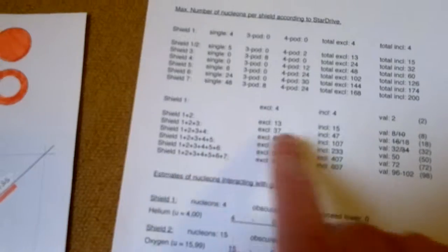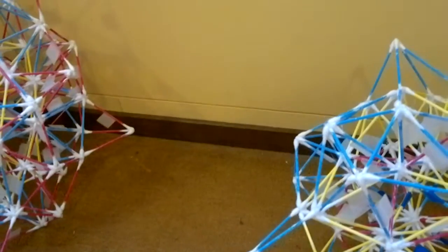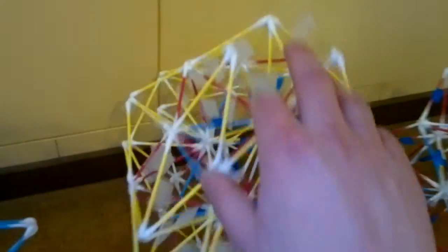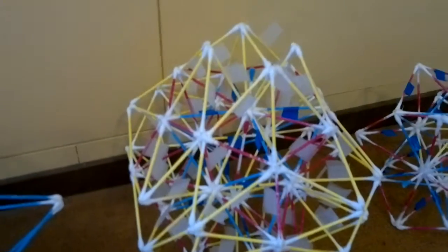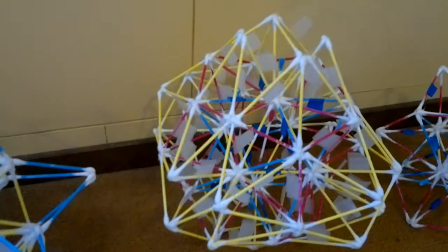And if I add those shields, I can keep track of the number of nucleons every atom, every element is made of. Say we have here shield five. That's thin shield five.